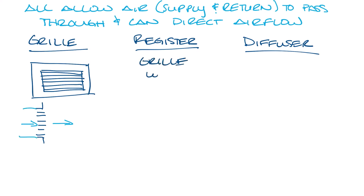Now a register is a grill with a damper. So from the front, it'd look the same, but if I draw it from the side, you would have a damper on the back of it. The air is still passing straight through the device, and the neck size and the face size are the same.